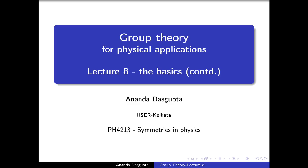In this lecture, I am going to talk about the procedures by which we can form bigger groups out of smaller groups. There are two main methods by which this can be done. One of them is rather simple and straightforward — it is called the direct product of two groups. The other one is slightly more involved and is called the semi-direct product. As will be clear from the examples we will show along the way, both of these kinds of products of groups have immense applications in physics.